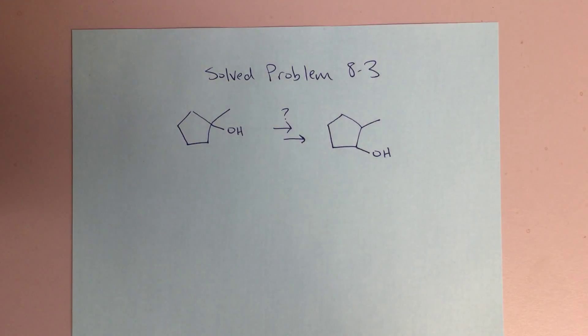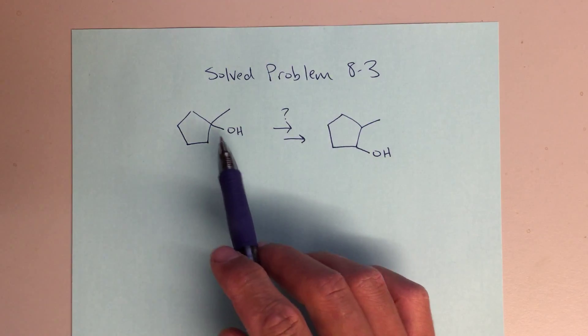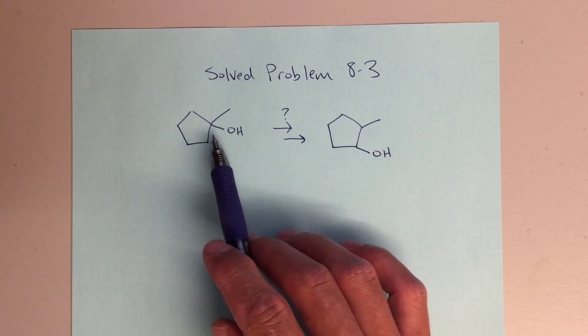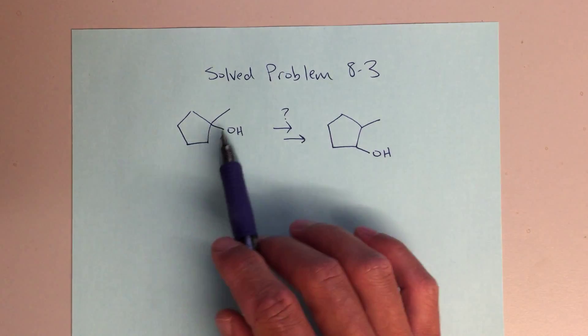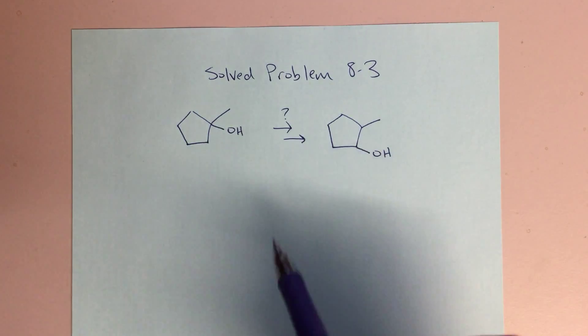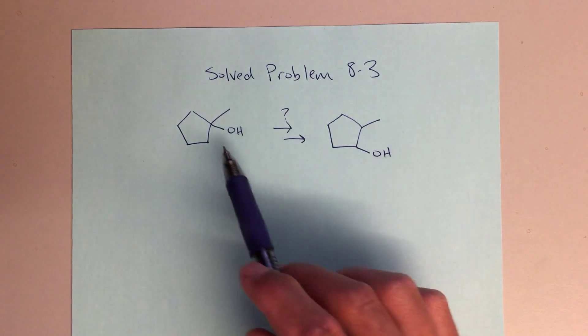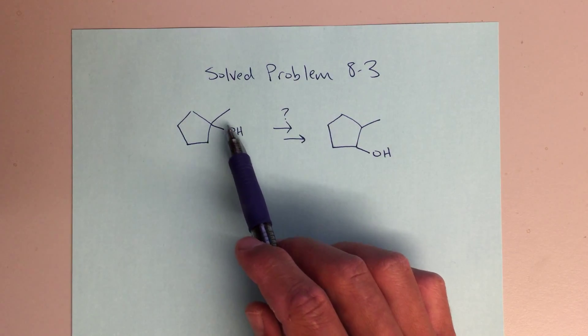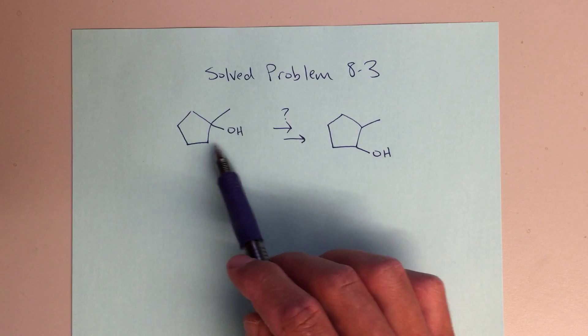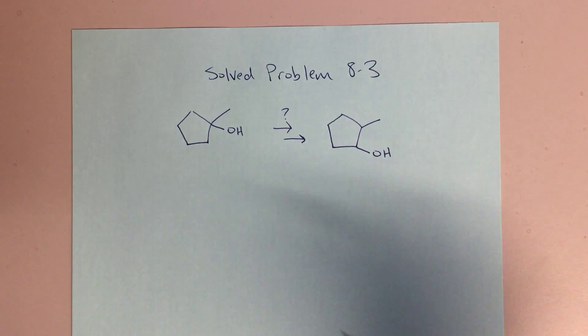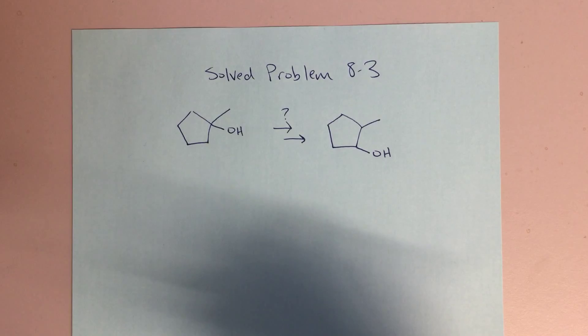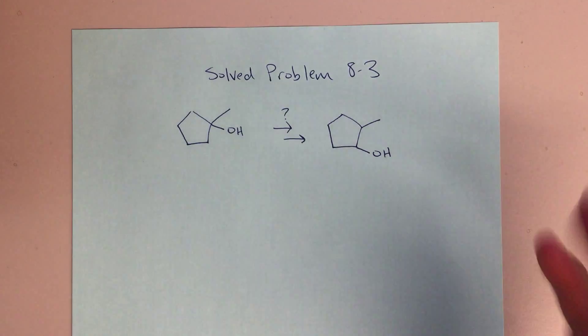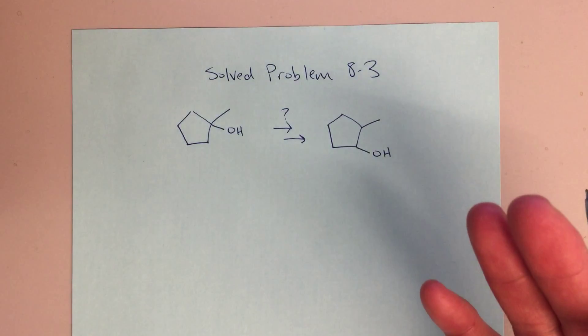Here we've got this problem where we're taking this alcohol and turning it into this secondary alcohol. We need to move this OH group from here to this other position in our final product. The thing we should be thinking about at this point is that an alkene is probably going to be involved.